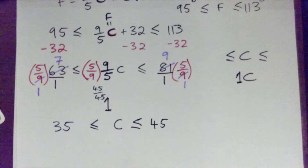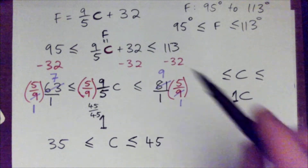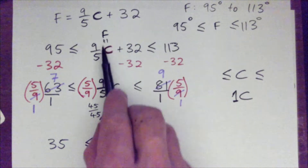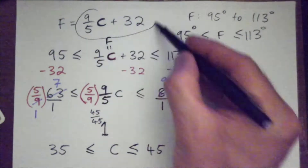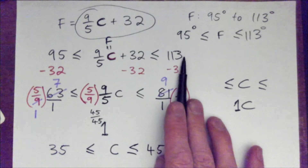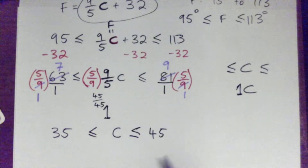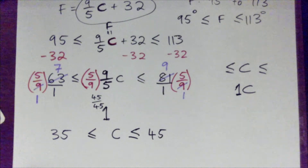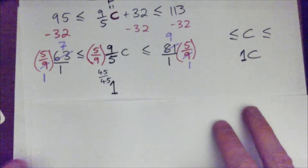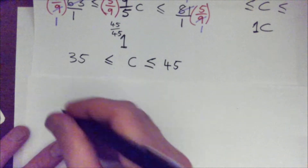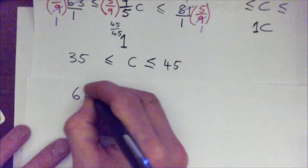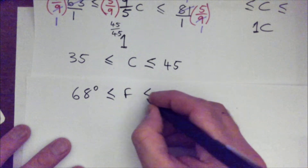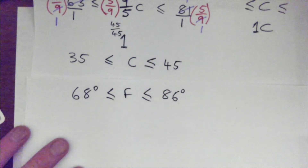Okay with that? The steps were: we put the expression in between the 95 and 113, and then we solved the compound inequality — we subtracted 32, then multiplied by the reciprocal. So what I'd like you all to do is the next one by yourself. The range is from 68 to 86 degrees Fahrenheit.